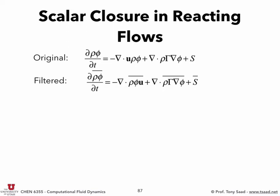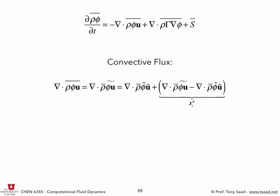For the convective flux, rho-phi-u-bar equals rho-bar times (phi u)-tilde by Favre filtering. We add and subtract phi-tilde u-tilde, giving a convective flux we know how to compute (since we're solving for u-tilde and phi-tilde) plus a residual flux J^R that we don't know — we call it J_TR from the convective flux.